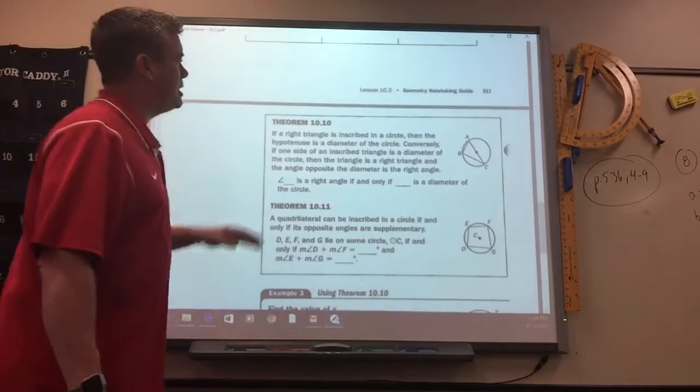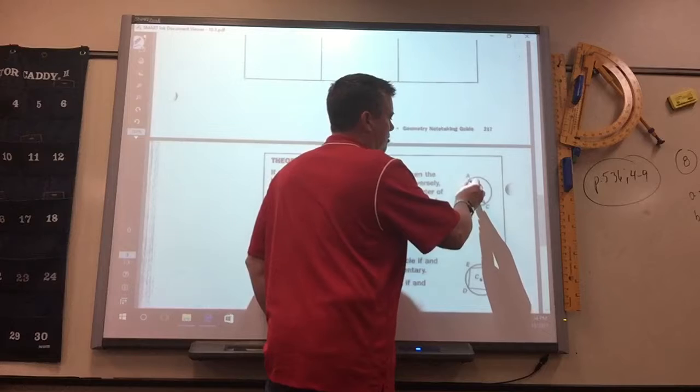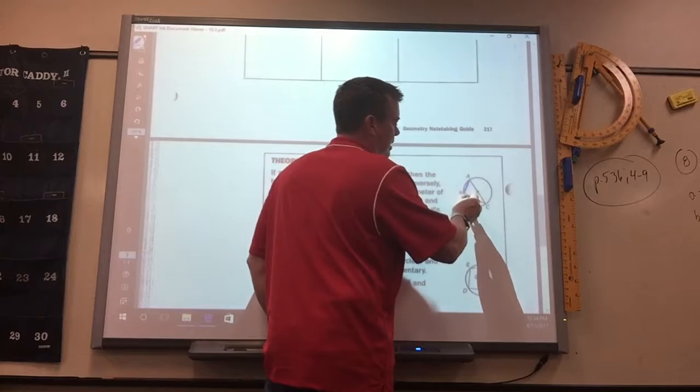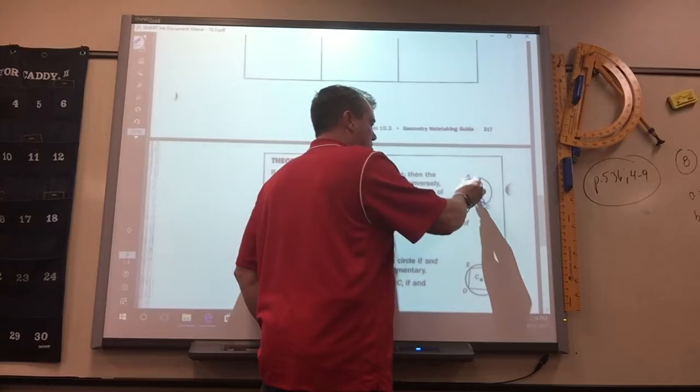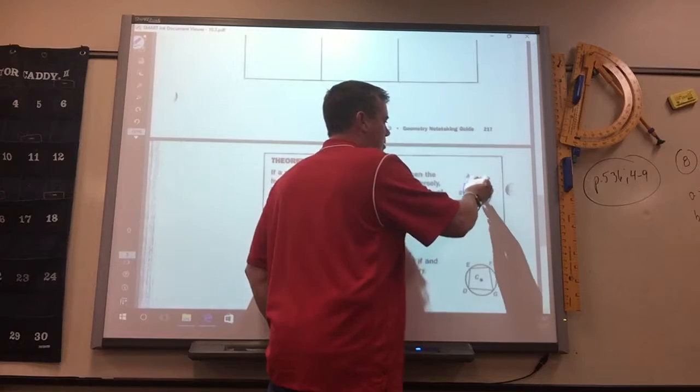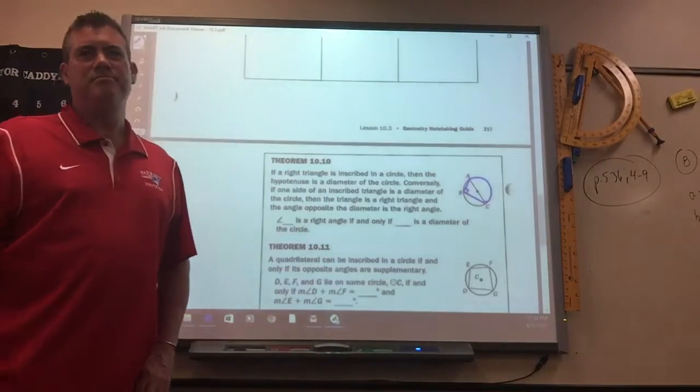This one is kind of common sense. If you've got an inscribed angle that intersects on a diameter, that's 180, so that's got to be 90. Okay?